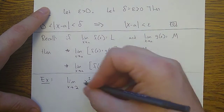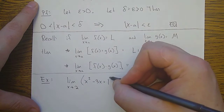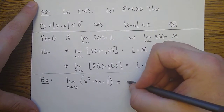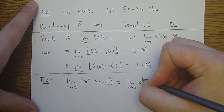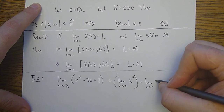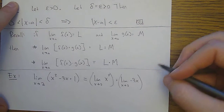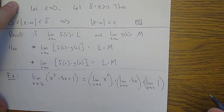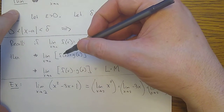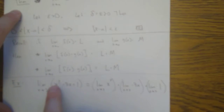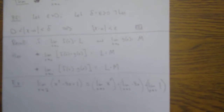Let me tell you a way that would be justified. First of all I can break up addition. So this is the limit as x goes to 2 of x squared, plus the limit as x goes to 2 of negative 3x, plus the limit as x goes to 2 of 1. I'm using the rule that says I can separately do the limit of each term and just add those together.